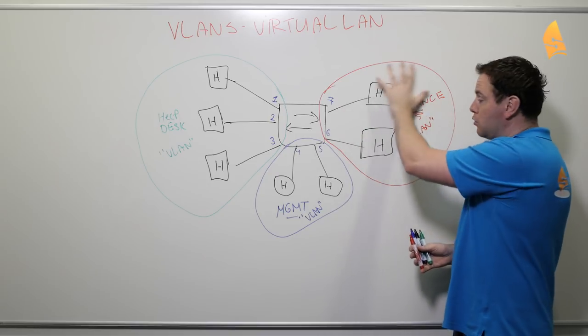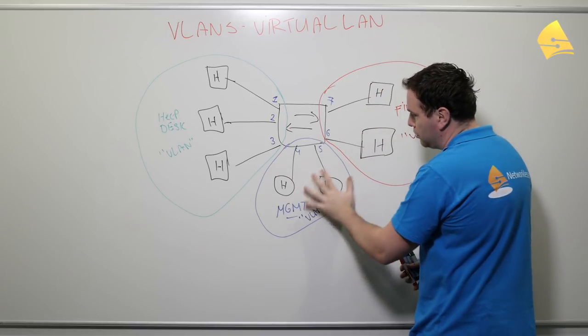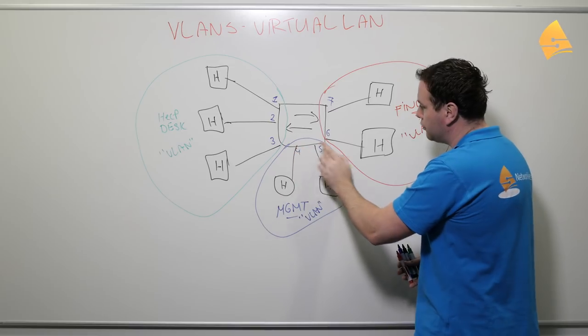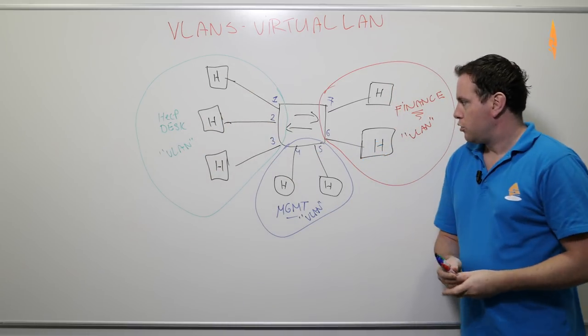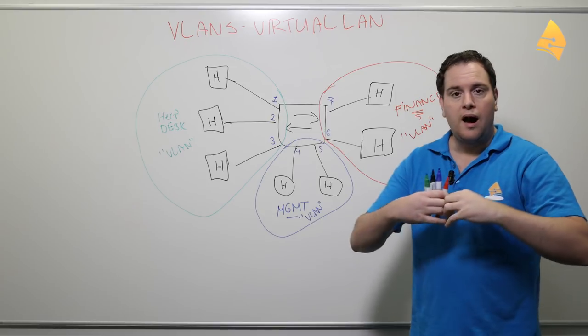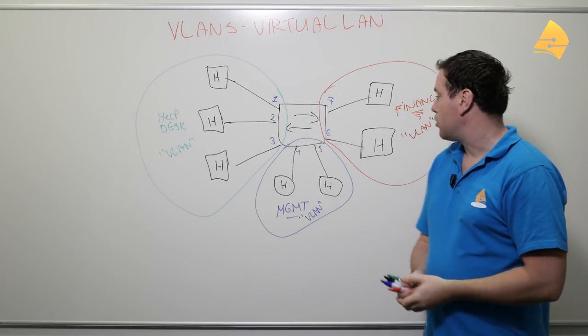These guys will be isolated, they can only communicate with each other. The same thing for the management VLAN, interface four and five, and the helpdesk VLAN. So this is very useful to isolate your user groups for example.